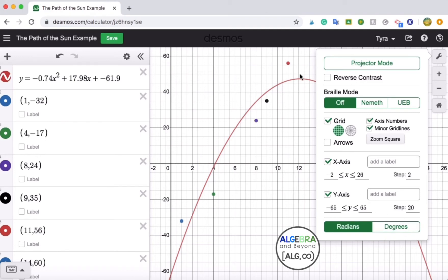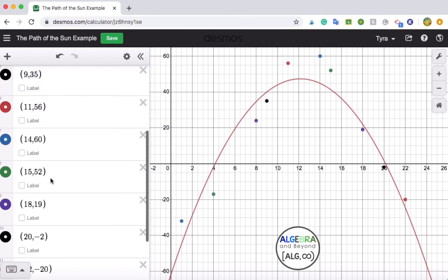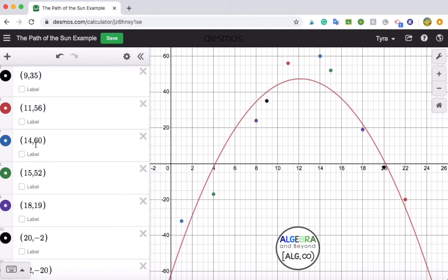And then for the highest point, you're going to maybe even look at your scatterplot data over here and see what your highest point was. It was 60, and that should work. Here's my 60 up there.